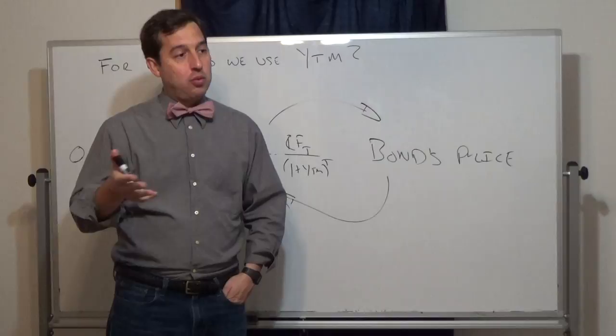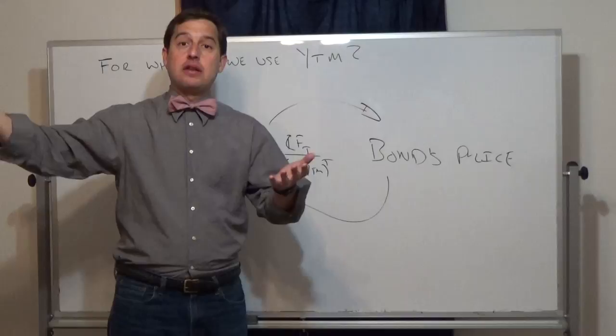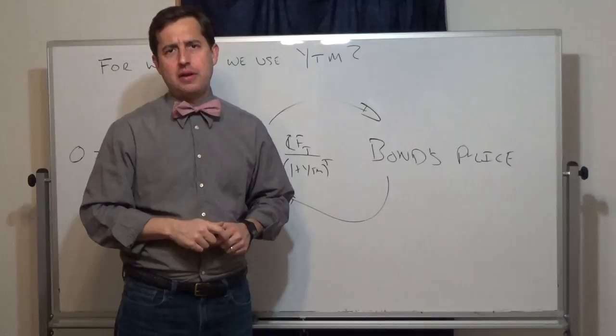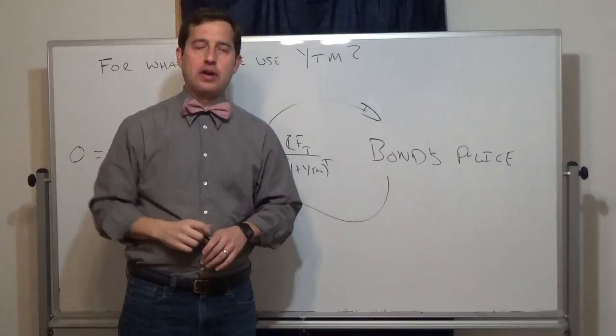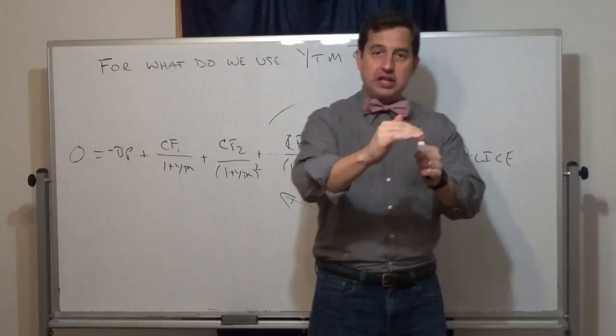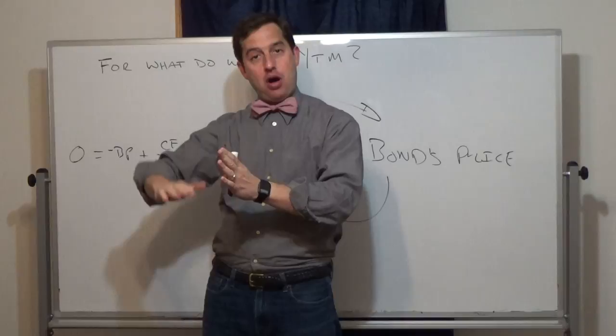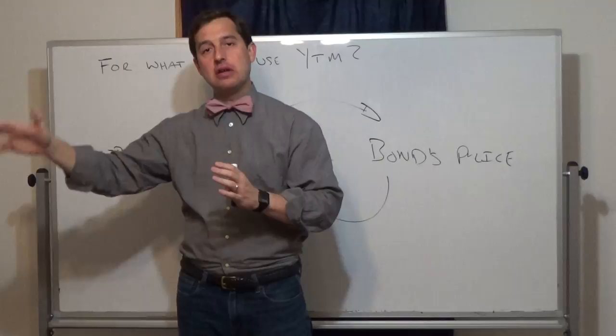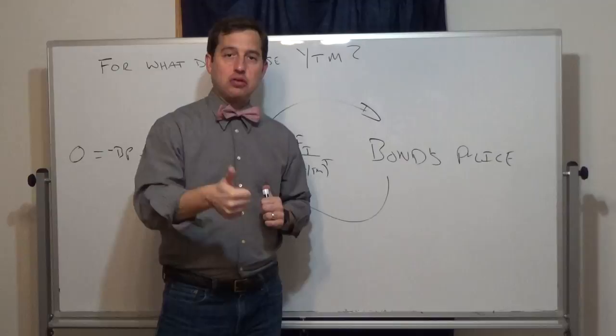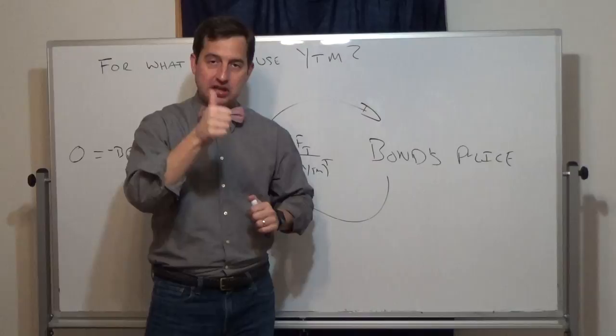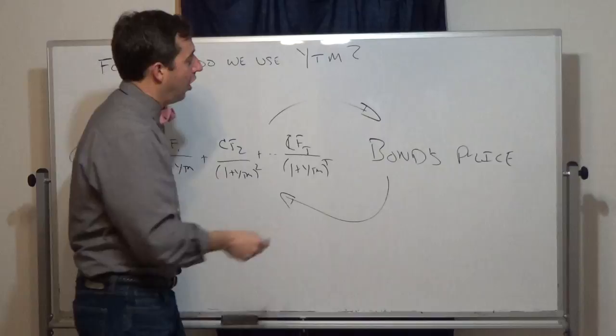Why isn't a bond's price that useful? Take a one-year Treasury note issued today — its coupons reflect current yields, so it trades around par at $1,000. A 10-year Treasury note issued nine years ago is also a one-year Treasury note now, but it might have been issued at 7%. With current one-year rates around 1%, it trades far above par, perhaps $1,100–$1,200. Both are one-year Treasury notes but with very different prices.